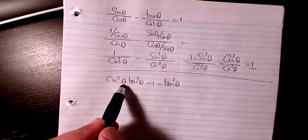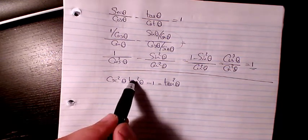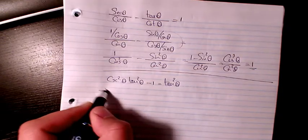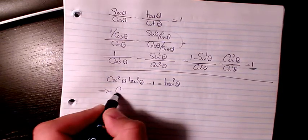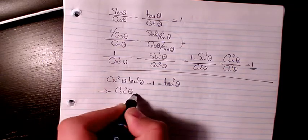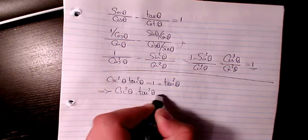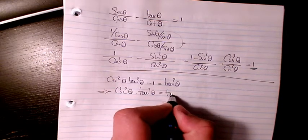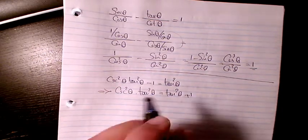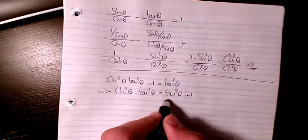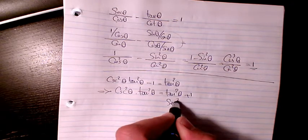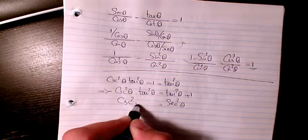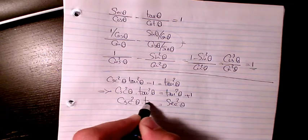In this video I have cosecant squared theta times tan squared theta minus 1 equals tan squared theta. I write cosecant squared theta times tan squared theta, and I put the negative 1 to this side, which is tan squared theta plus 1. We know tan squared theta plus 1 is secant squared theta, so here I have cosecant squared theta times tan squared theta.